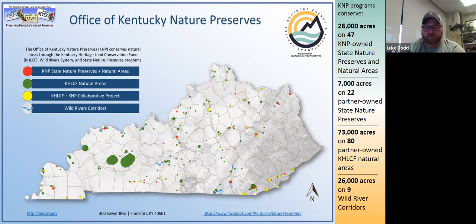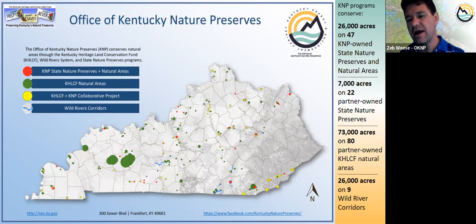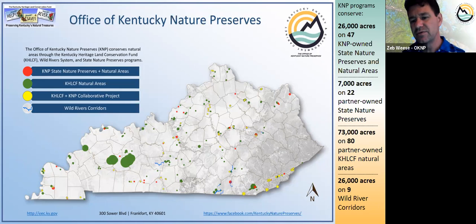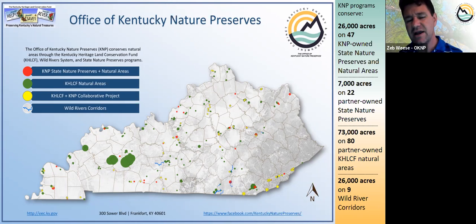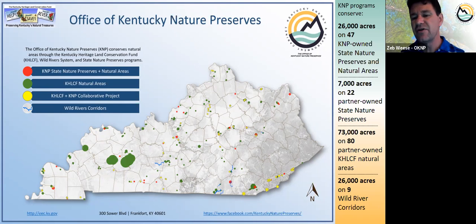Here's a map of every property our programs are involved with. Before I talk about the properties we're involved with, let me talk about what we're not involved with. All the white on this map is either privately owned - about 95% - or in some sort of public ownership that is not necessarily what we would call conservation. Government-owned property includes your county courthouse and all the interstates - certainly not conservation areas. About 95% of Kentucky is privately owned.